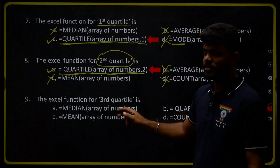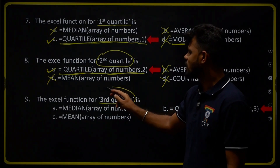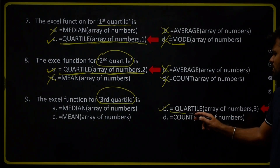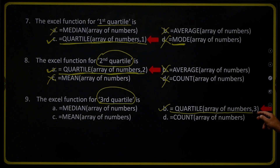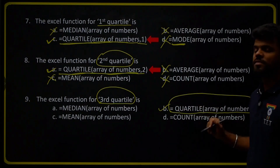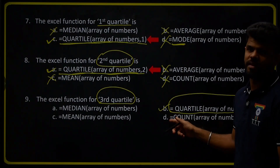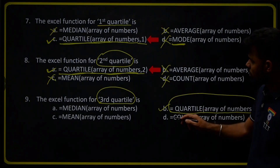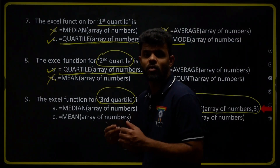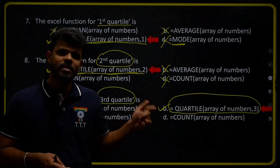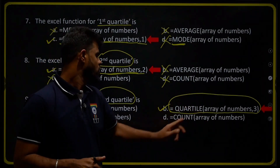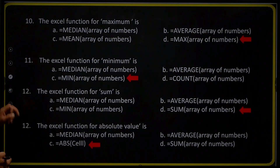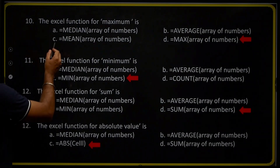Question number nine: the Excel function for the calculation of the third quartile. The formula is =QUARTILE(array of numbers, 3). Option B is the right answer. We will not use MEDIAN, MEAN, or COUNT formulas — only =QUARTILE(array of numbers, 3) with comma three is the correct formula. Therefore option B is the right answer.